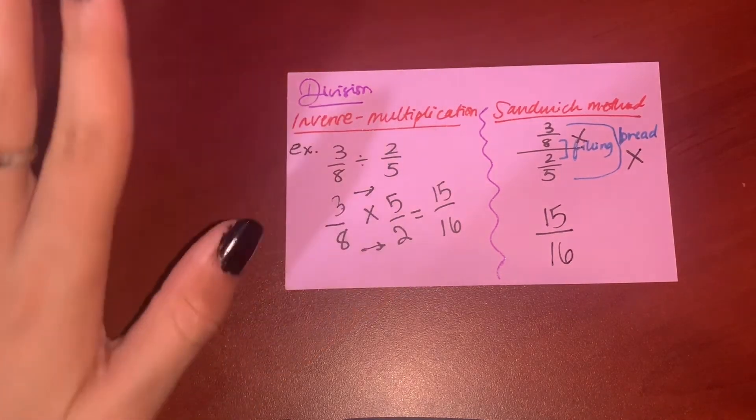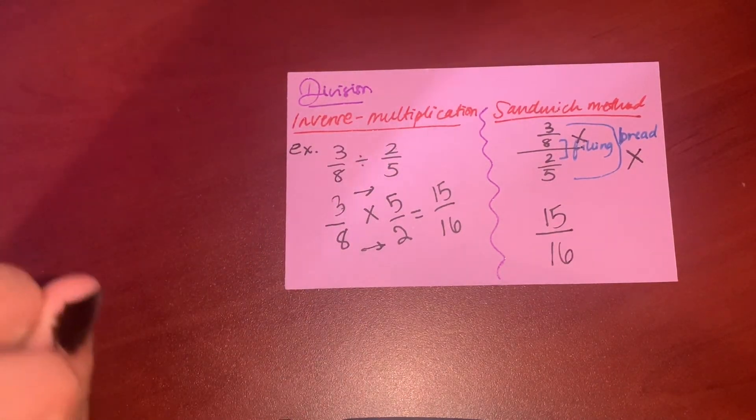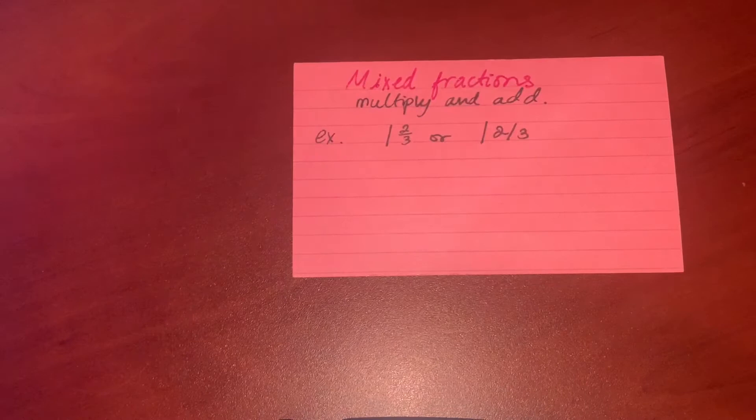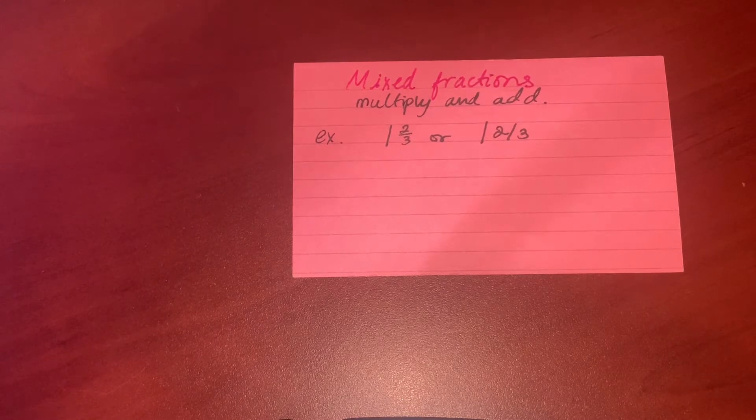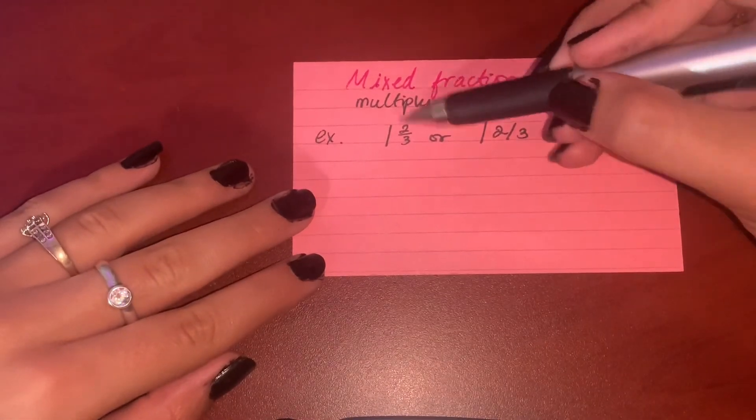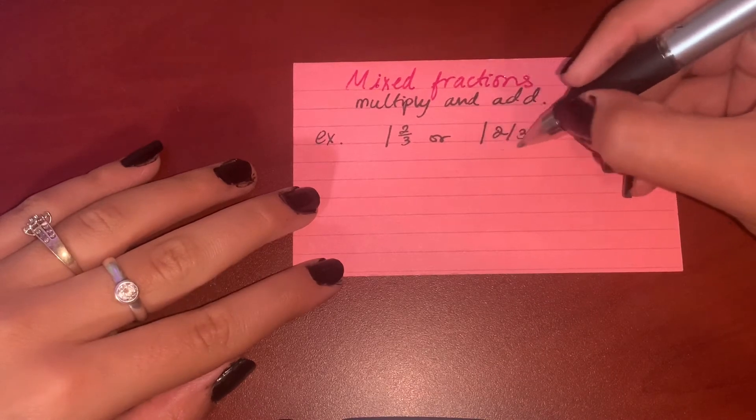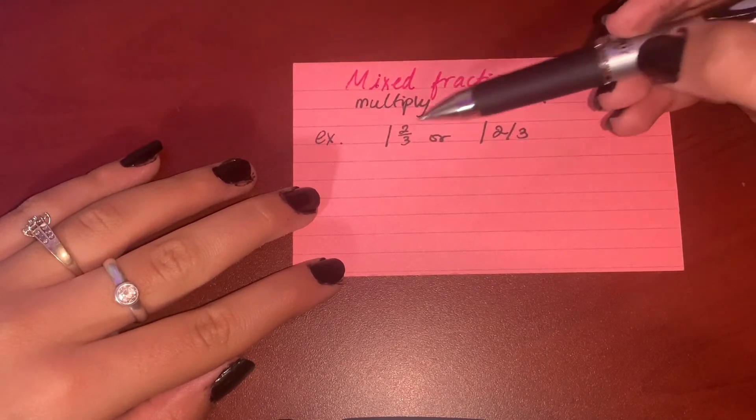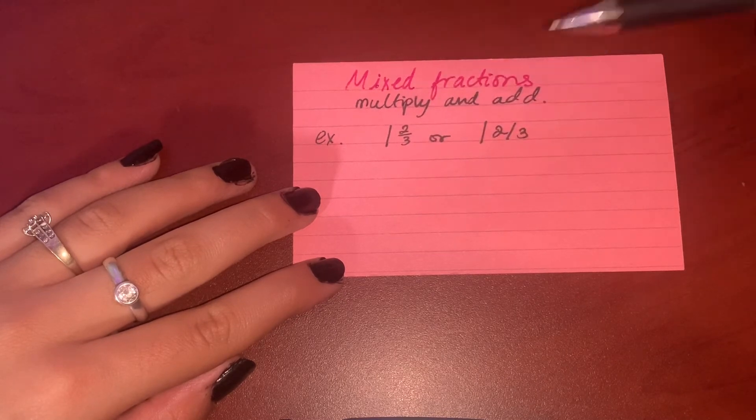Now we come to mixed fractions. Mixed fractions involves two steps. It's telling you first to multiply and then add. Now you can get the problem—well, in the HESI, I saw that the problem looks like this, but then it's the same meaning as this. It can be this or this; it's the same.